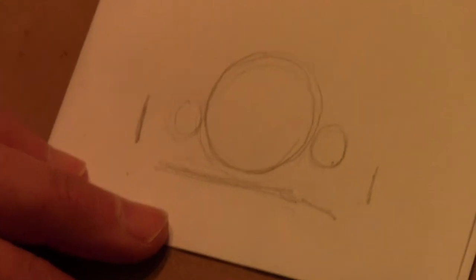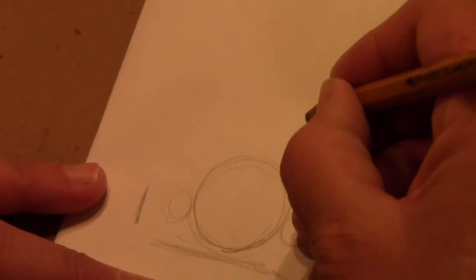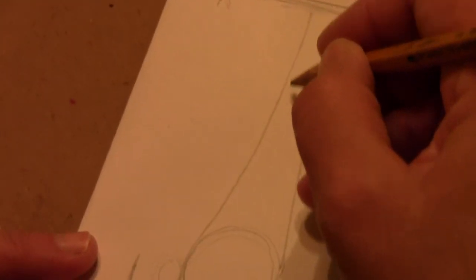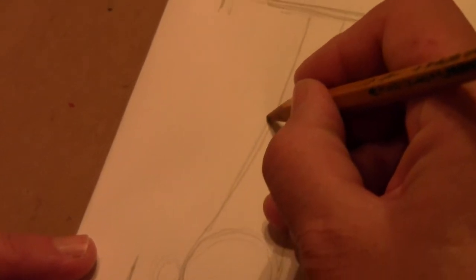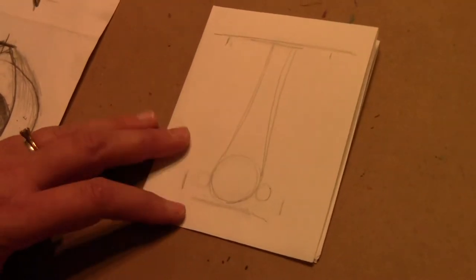This center part of our nose is called the bridge, and so the bridge of our nose comes up and goes all the way to the top of our eyebrow or our eye line. We don't want it to be too narrow.